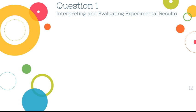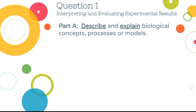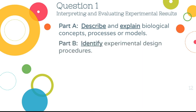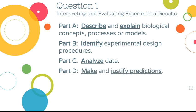Let's talk about the specific question types on this exam. Question one — interpreting and evaluating experimental results — always has four parts: Part A asks you to describe and explain biological concepts or processes; Part B asks you to identify experimental design procedures such as variables and controls; Part C asks you to analyze data, which can include finding patterns or performing calculations.